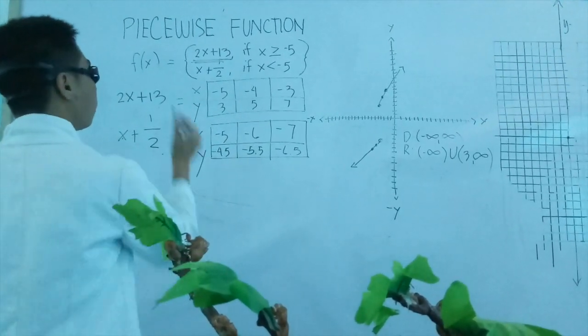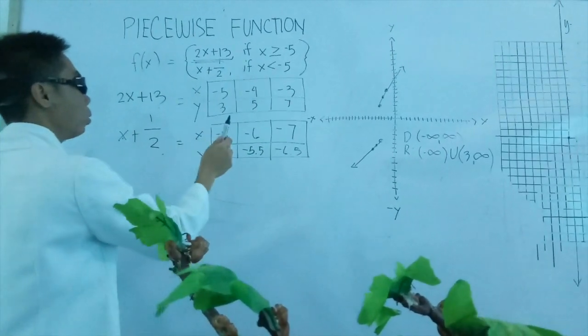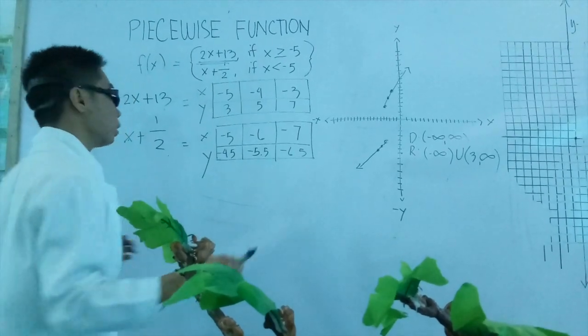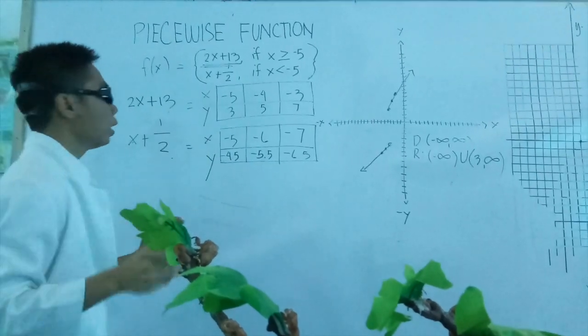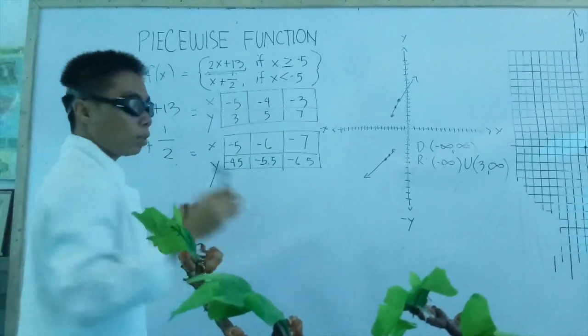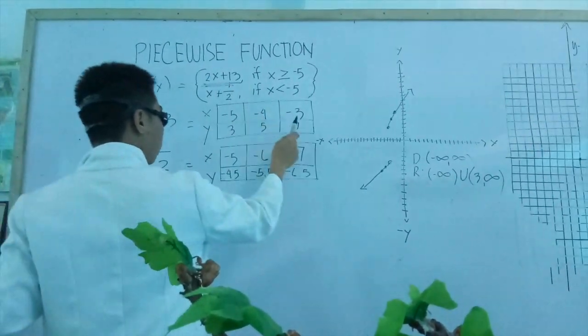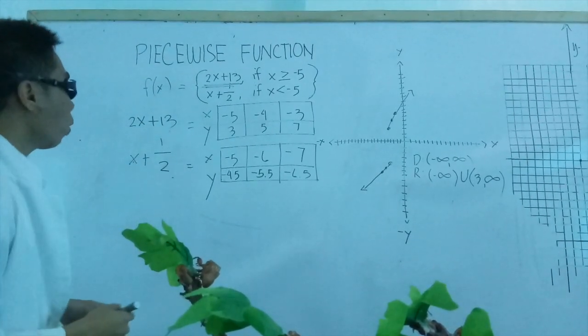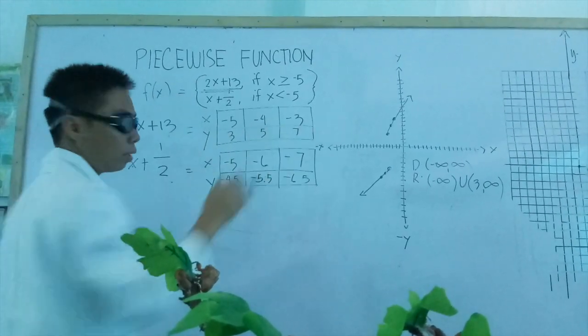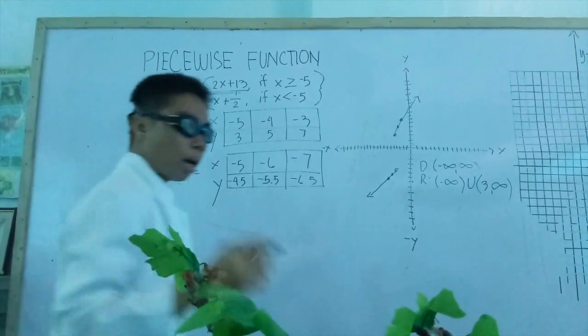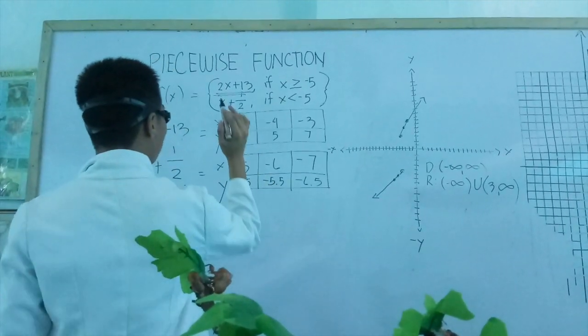Then I fill in the points of X and then the points of Y. Basing on the first formula, the condition here is X is greater than or equals to negative 5. Since it says equals to negative 5, so I put negative 5 first above and then next is greater than, so what's greater than negative 5 which is negative 4, then negative 3.